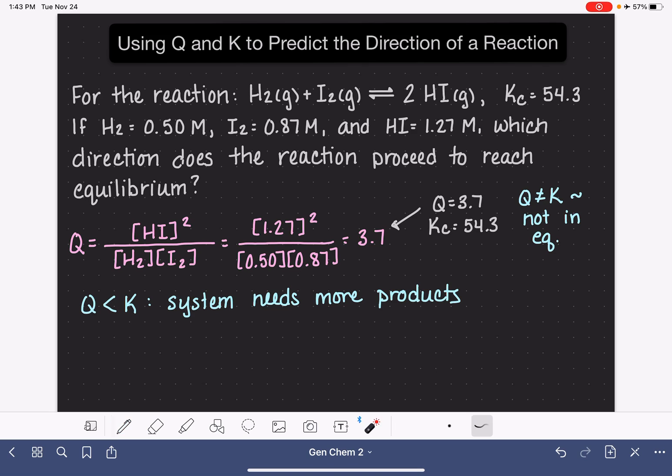If the system needs more products, it's going to accomplish that by increasing the rate of the reaction in the left-to-right direction. And we refer to this as the reaction or the system shifting to the right, to the direction of the products.